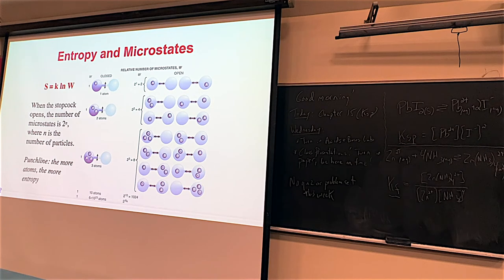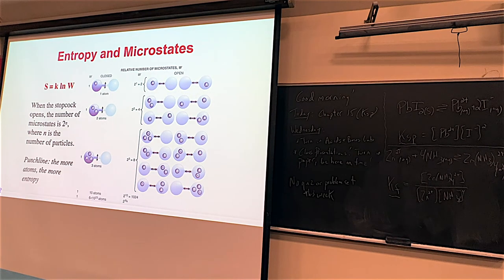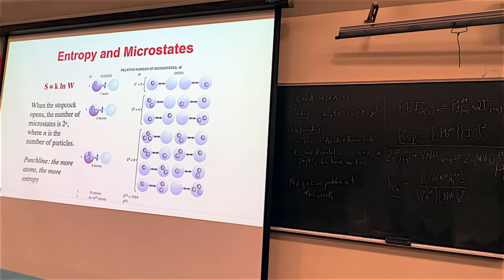Here's a chemical example: molecule A in two possible chambers — A can be on the left or right, giving two microstates. With two molecules in two containers, you get more microstates. Three atoms give even more. The number of microstates increases dramatically with more atoms — up to 2 to the power of Avogadro's number for typical amounts. The more atoms you have, the more microstates, the greater the entropy.